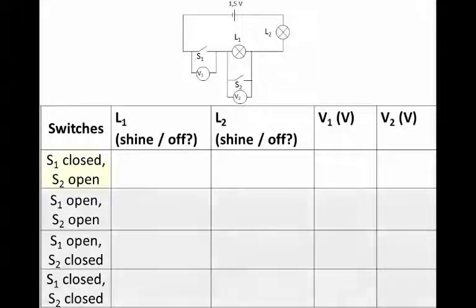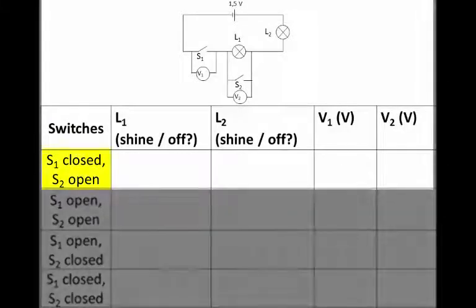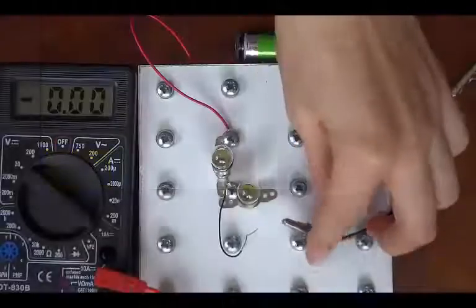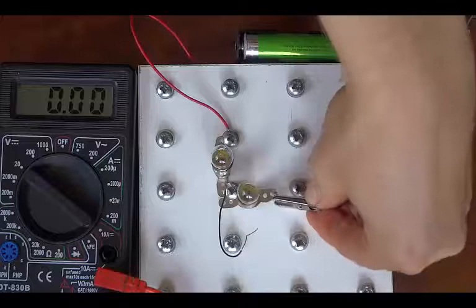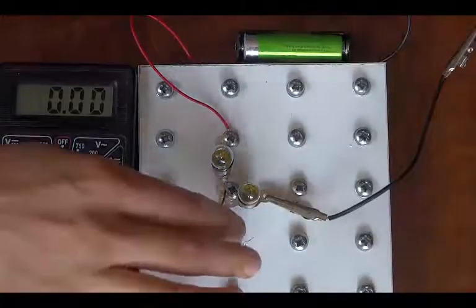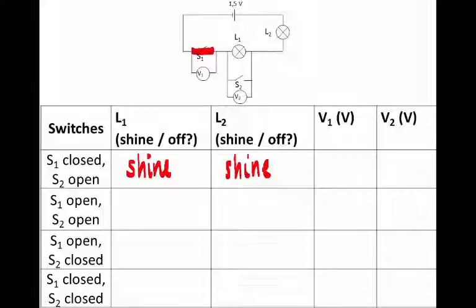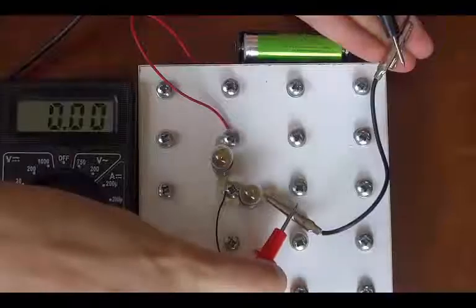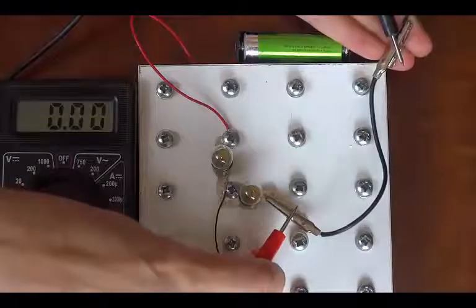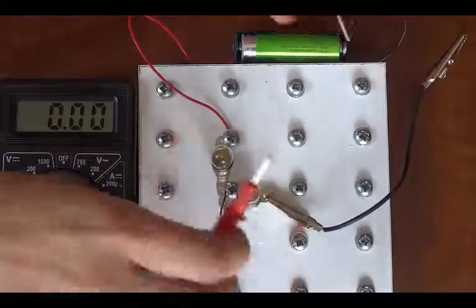So now we need to take our measurements. First setup: switch 1 must be closed and switch 2 must be open. So the crocodile clip is switch 1, so we close it over here. This is switch 2, we keep it open. We can see that both of the bulbs are shining. Now we need the potential difference across switch 1. You can see switch 1 is just a good conductor now because it's closed. Place our voltmeter across the closed switch 1. Zero volt reading.